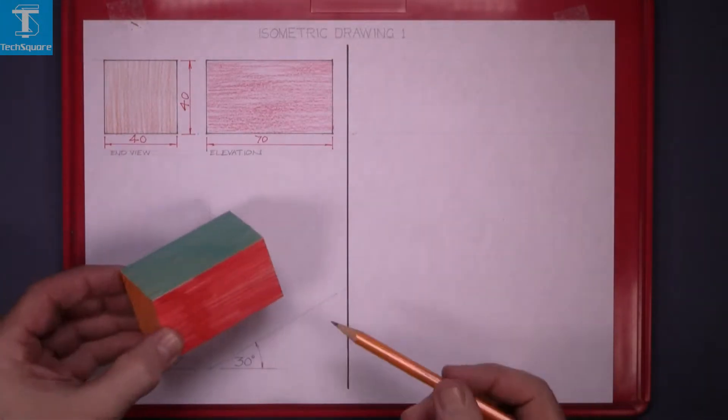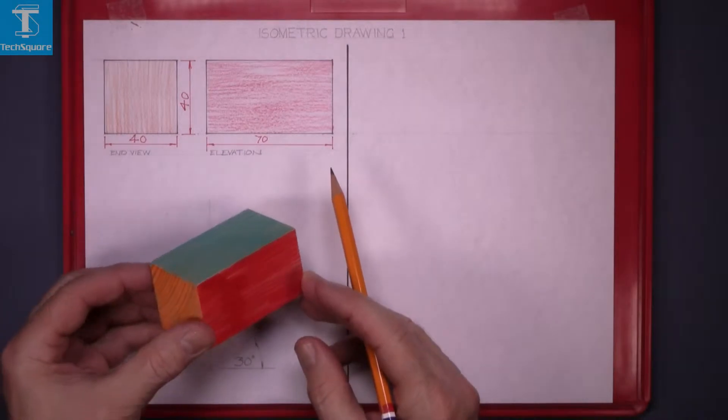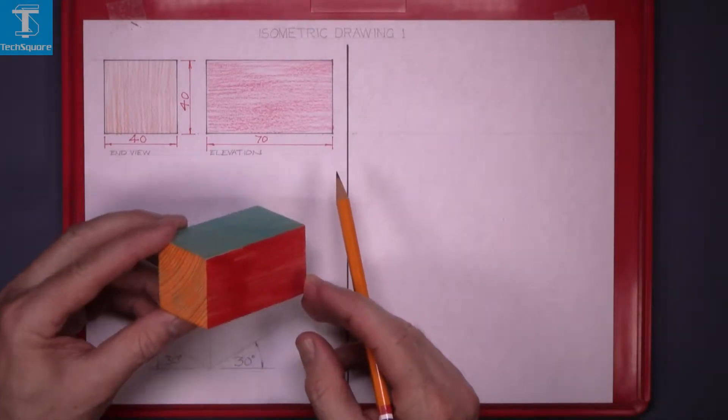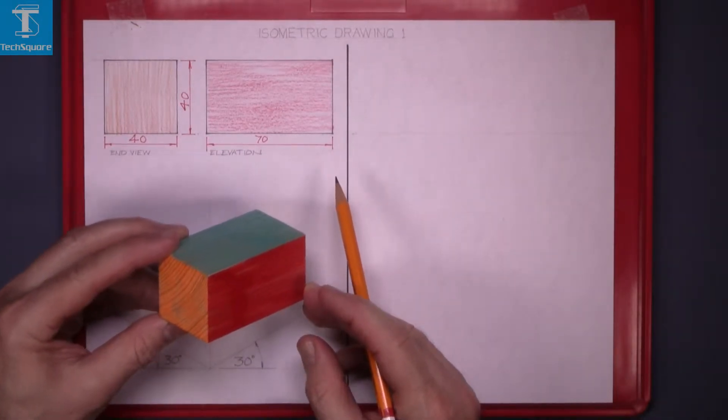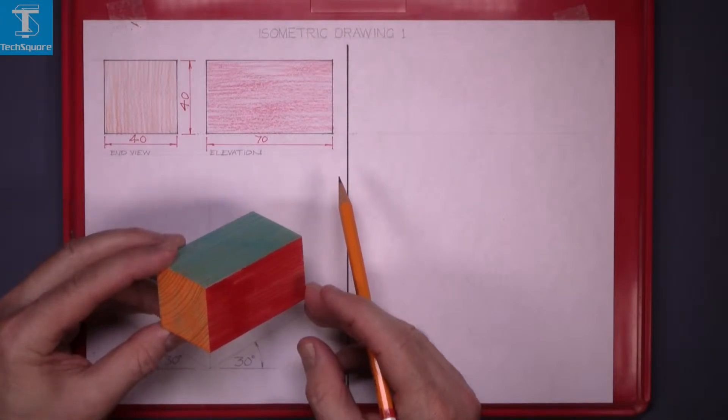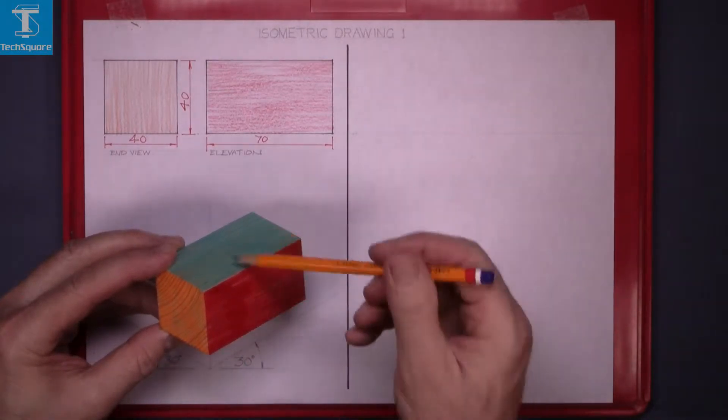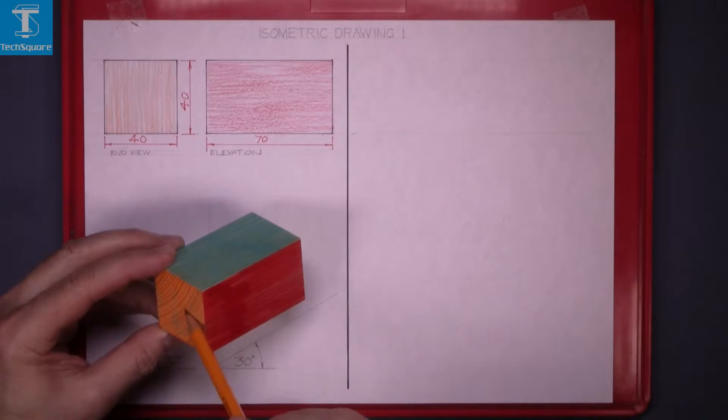An isometric drawing is three dimensional and that is the view we will see there. We will see this red surface, the blue surface, and the orange surface.